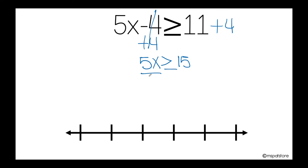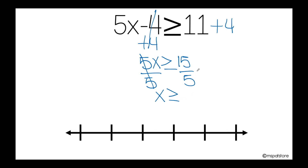So I'm going to divide by 5 on this side of the inequality and divide by 5 on the other side of the inequality. Now I'm ready to cancel it out. x is greater than or equal to 15 divided by 5, which equals positive 3.